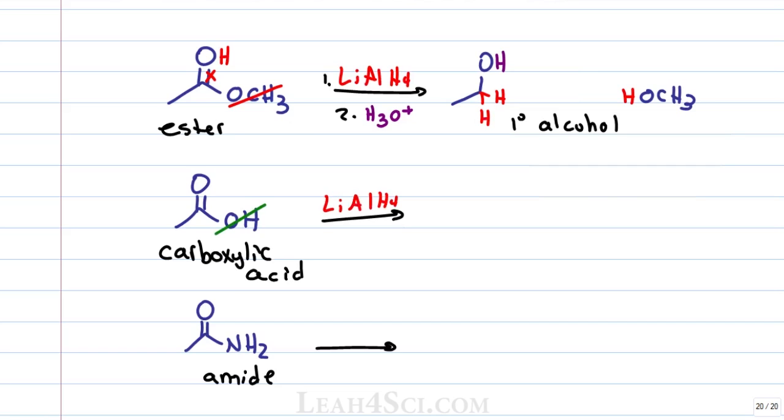Carboxylic acid will lose the hydroxy group completely and the rest will be reduced just like we've seen before, once again giving you a primary alcohol where the hydrogen on the oxygen also comes from the protonation step.